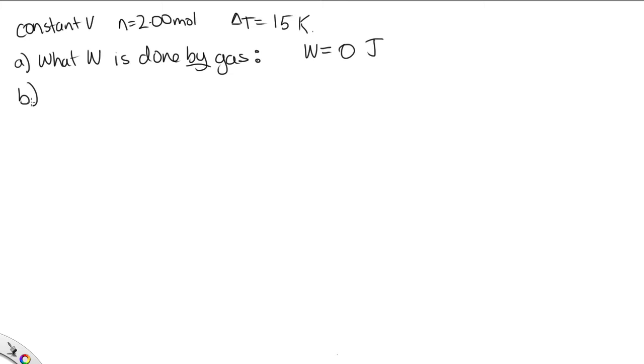Part B asks us how much energy is transferred as heat. To work this out, we need to use Q equals nCv delta T. Now it's a monoatomic gas, which tells us F is equal to 3. So Cv is equal to F over 2R, which is 3 over 2 times 8.314. Solving that on the calculator, we get 12.471.